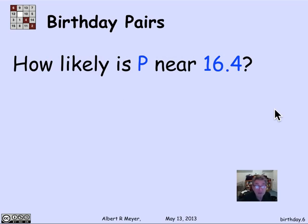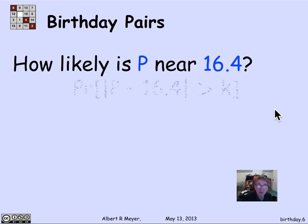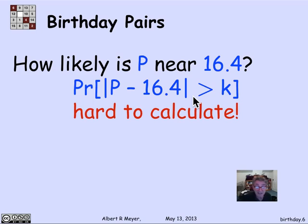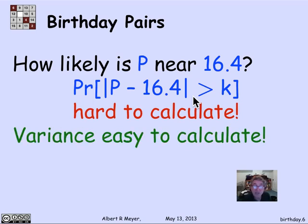That's an expected value — how likely is it to be close? If I take 110 students and count matching birthday pairs, do I really expect to get close to 16.4? What we're asking is the probability that P is near its mean, that the distance between P and 16.4 is greater than K — hopefully small as K gets bigger. This probability is a mess to calculate directly, but we can get a grip on it because the variance of P is easy to calculate, allowing us to apply the Chebyshev bound.